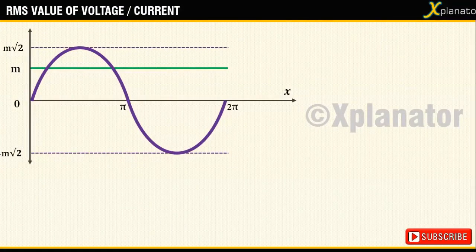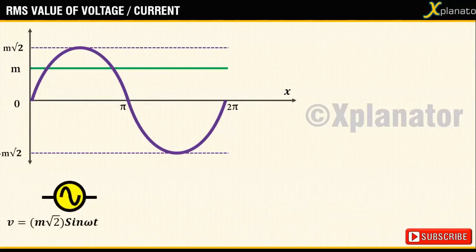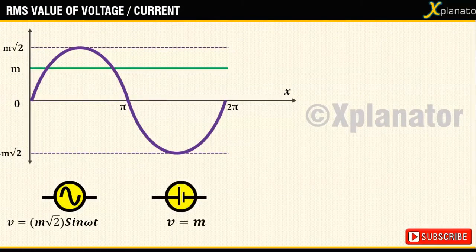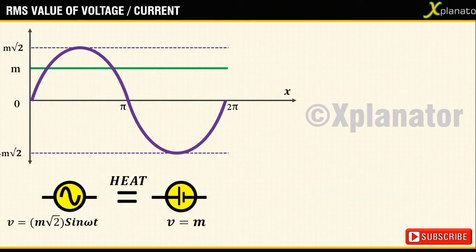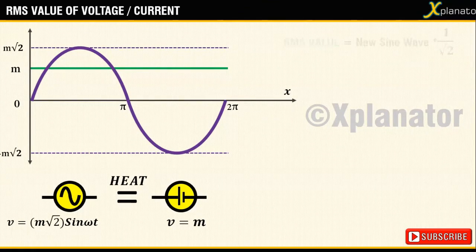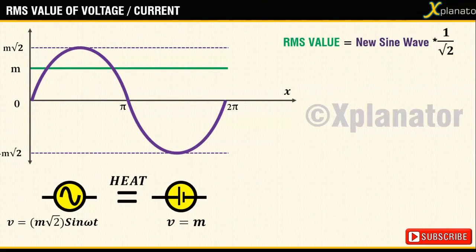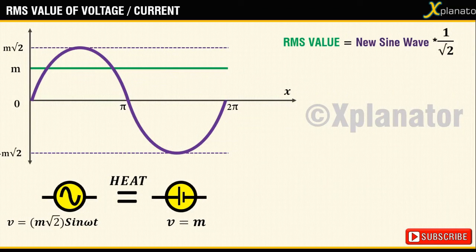This means if you take an AC wave with a magnitude of m√2, it will generate the same amount of heat as that of a DC wave which has a magnitude m.